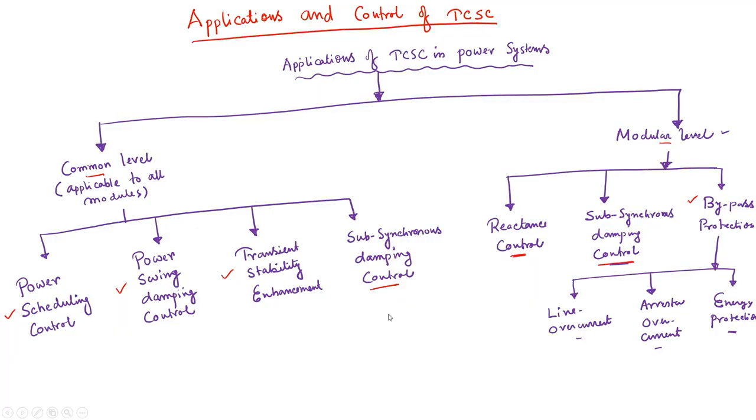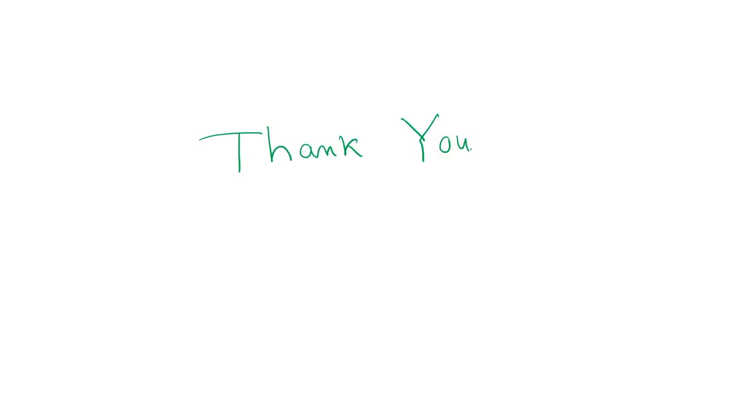This covers all control actions and applications of TCSC: power scheduling control, power swing damping control, transient stability enhancement, subsynchronous damping control, and reactance control. With this I will stop today and proceed to the next module. Thank you very much for joining this lecture.